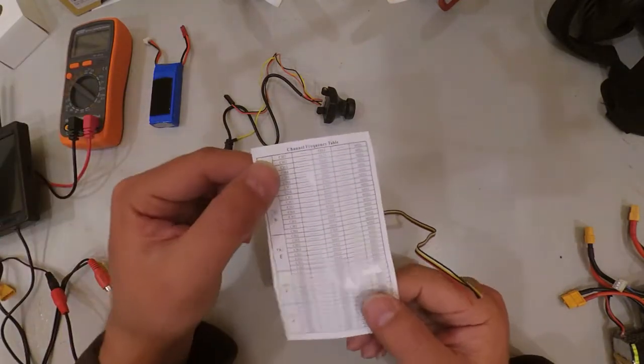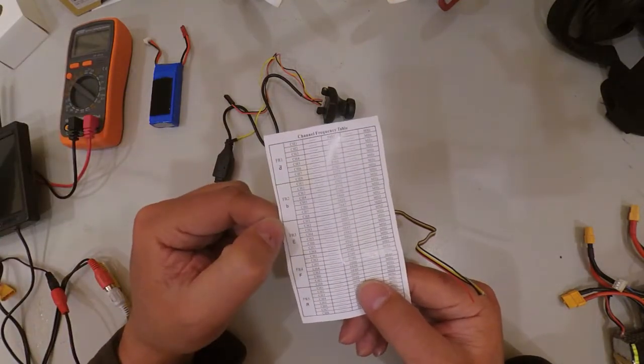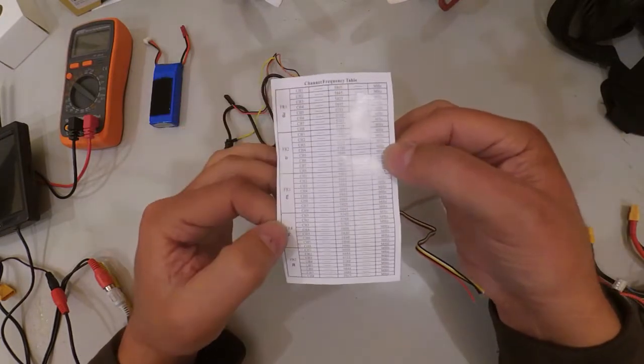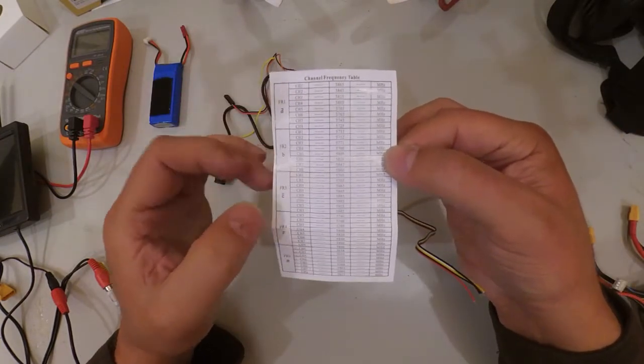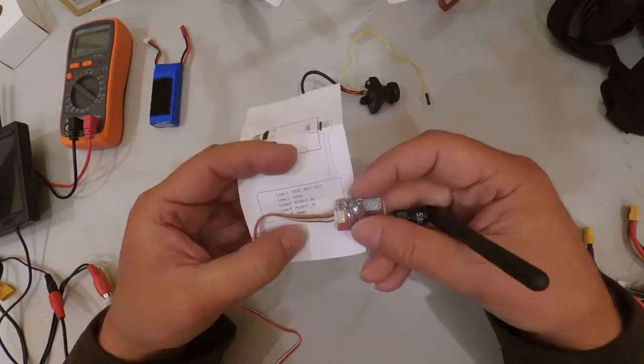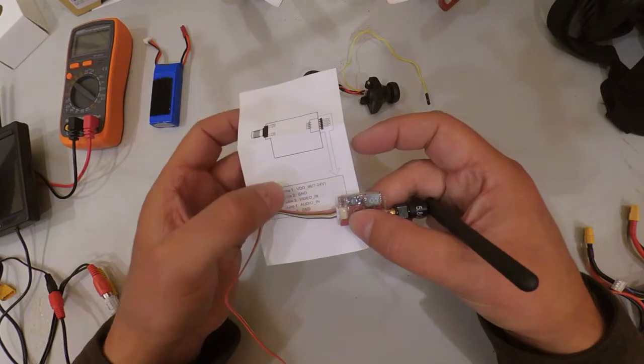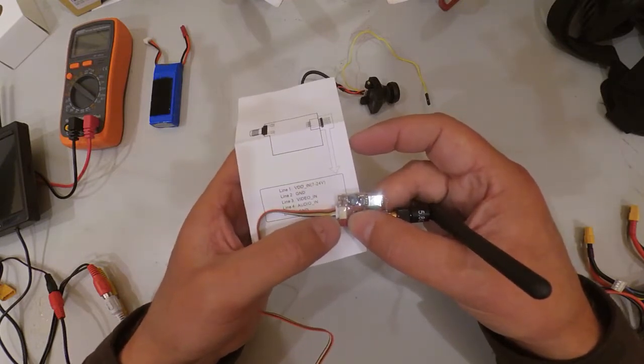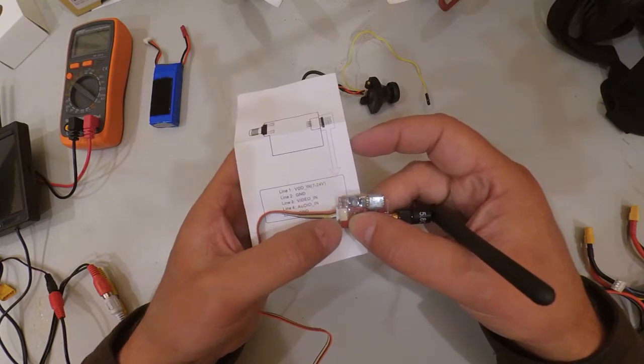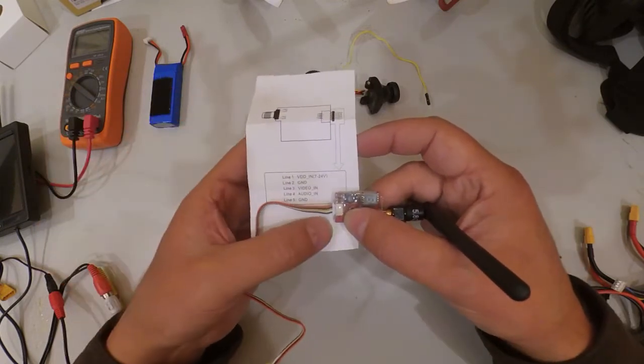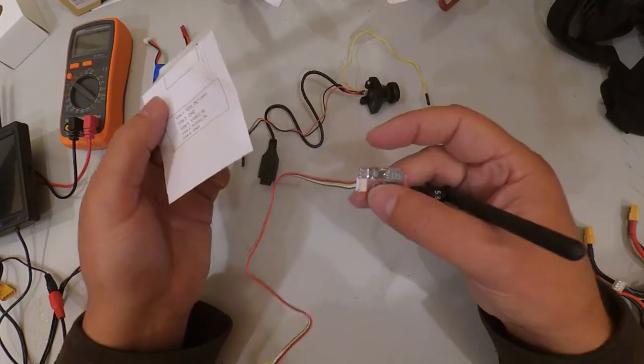Your transmitter will usually have a button for changing channel settings. It comes with a card describing how your channels work, the frequencies they're on, and how to set it up. We have red as voltage in, black for ground, yellow for video in, white for audio in, and black again for ground. Black is always ground.